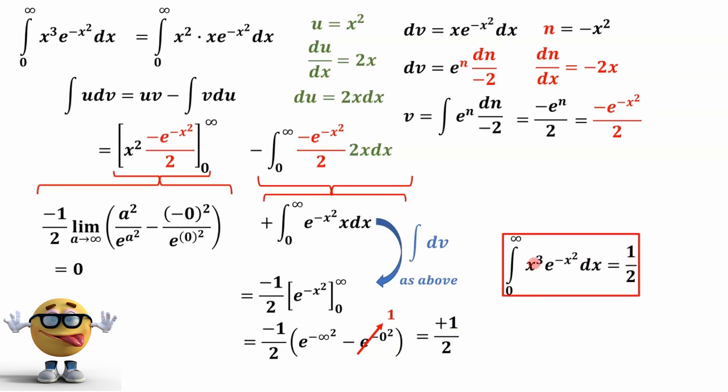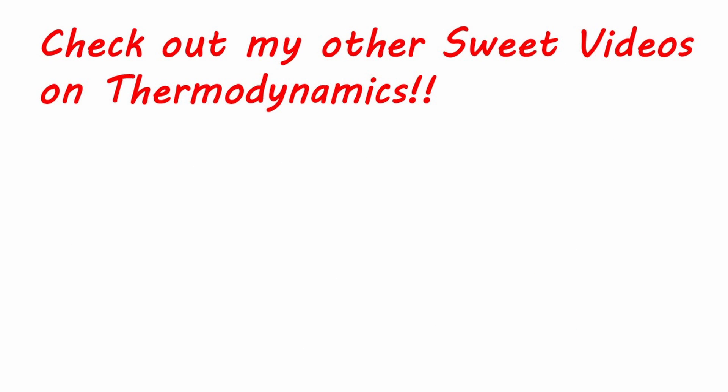And that's our integral. So the integral of x cubed times e to the negative x squared dx from 0 to infinity is 1 half. Hope you enjoyed it.